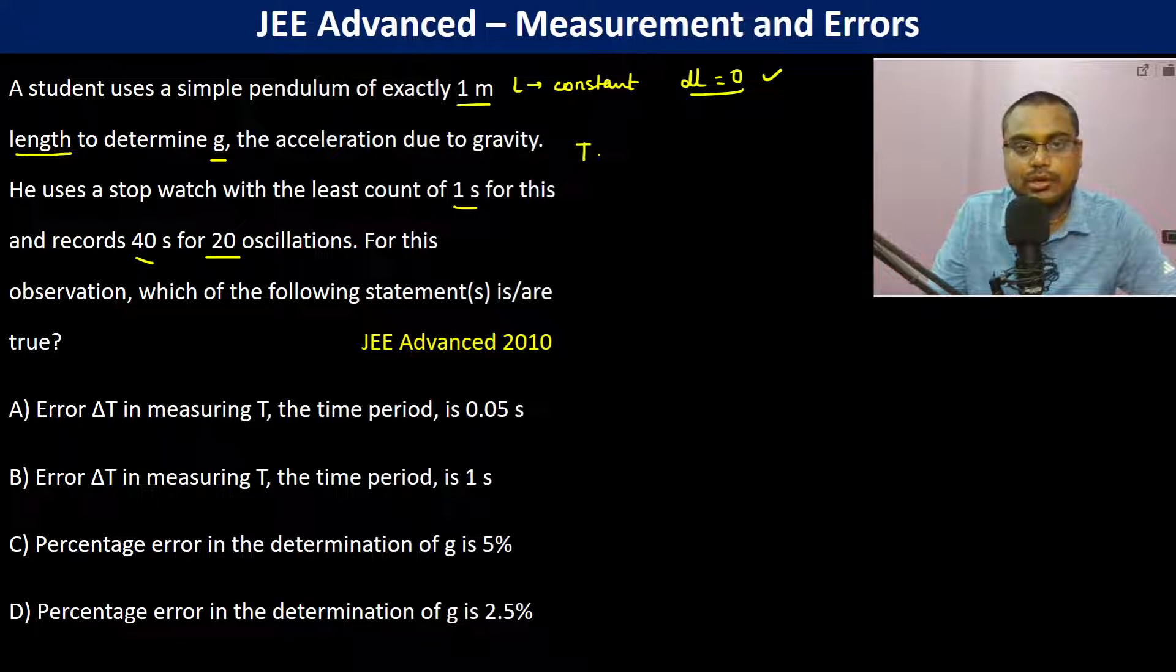The time period for 20 oscillations is 40 seconds plus or minus 1 second.